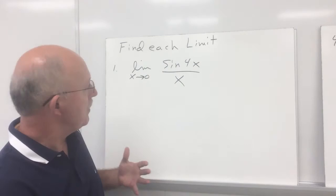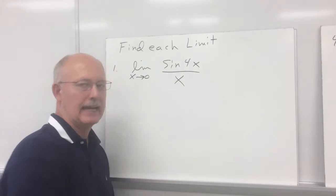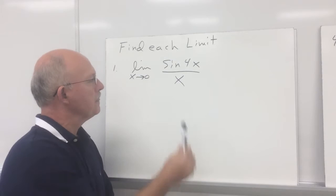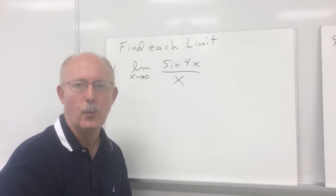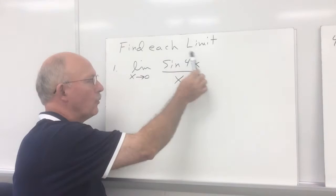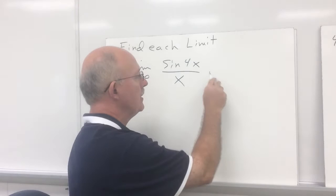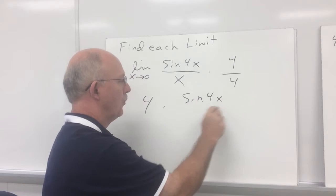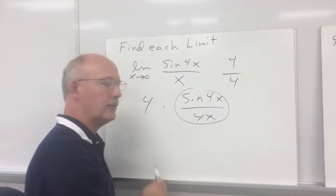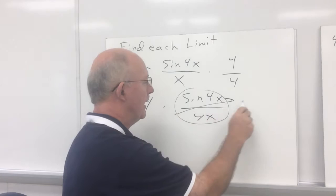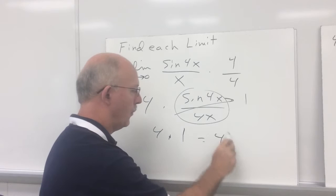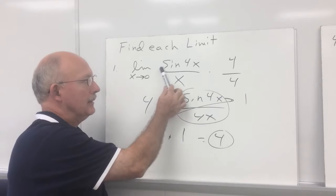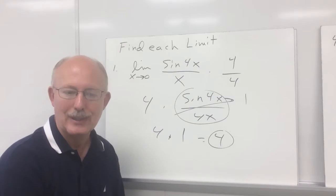You can almost see sin x over x here, except this is sin 4x over x. I know sin 4x over 4x should also be 1, so I need a 4 on the bottom of this fraction. I'm going to multiply by 4 over 4, which gives us 4 times sin 4x over 4x. That's one of our special trig limits — sin 4x over 4x simplifies to 1. So we end up with 4 times 1, which is 4. This particular trig limit is 4.